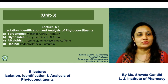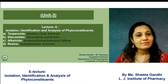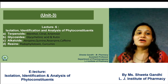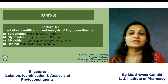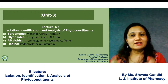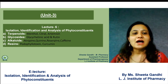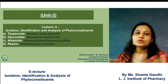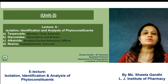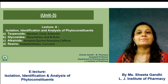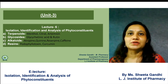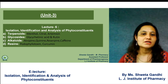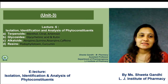In this chapter on isolation, identification, and analysis of phyto constituents, we will study different categories of secondary metabolites and the drugs belonging to them. The first category is terpenoids, which includes menthol, citral, and artemisinin. The second is glycosides, which includes glycyrrhizic acid and rutin. The third is alkaloids, which includes atropine, quinine, reserpine, and caffeine.